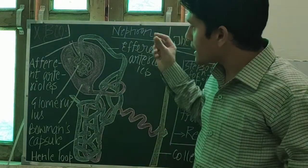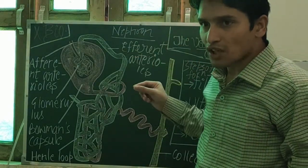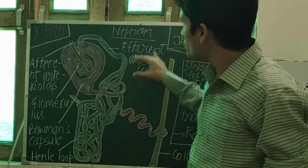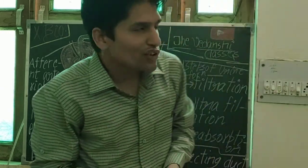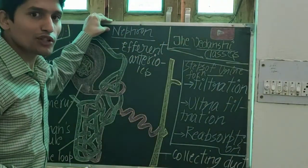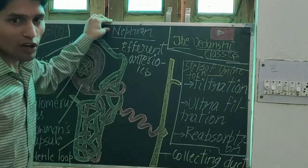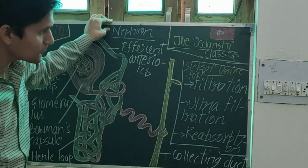In kidneys, there are tubular-like structures. The structural unit is called nephron. Nephron is the structural and functional unit of the kidney, or excretion in human beings.